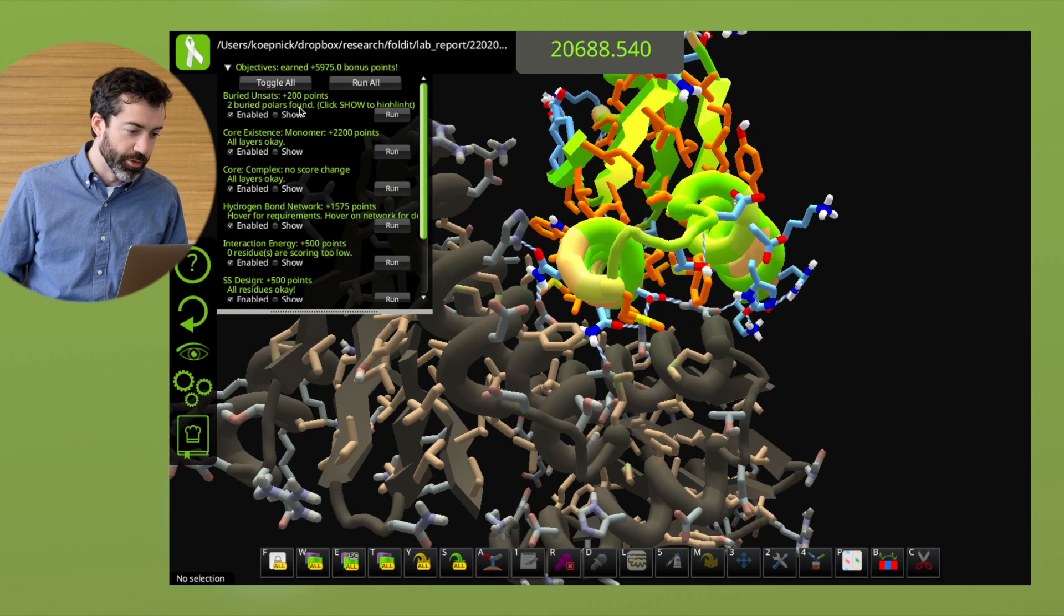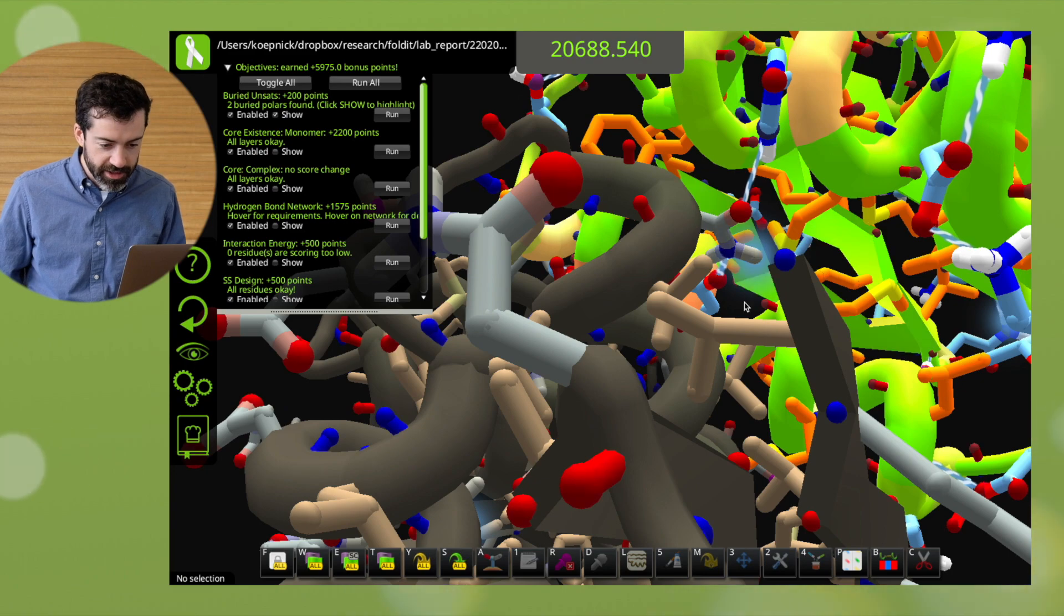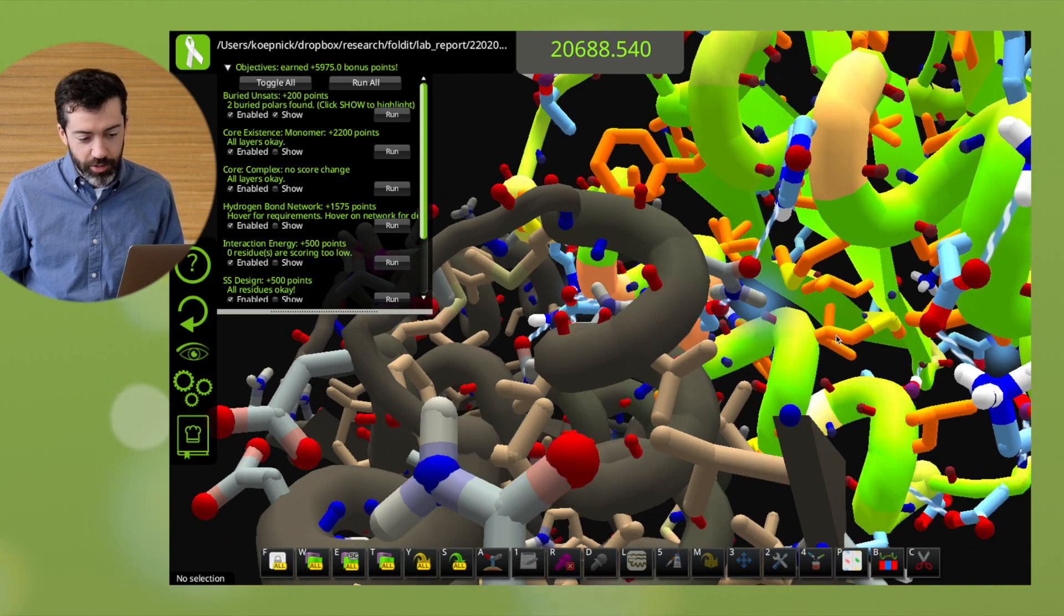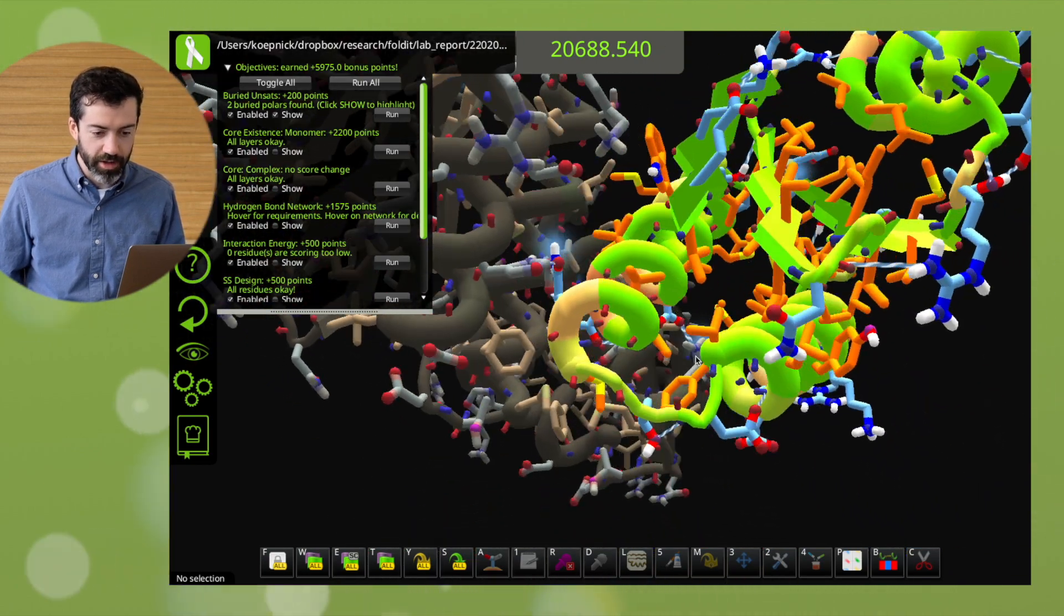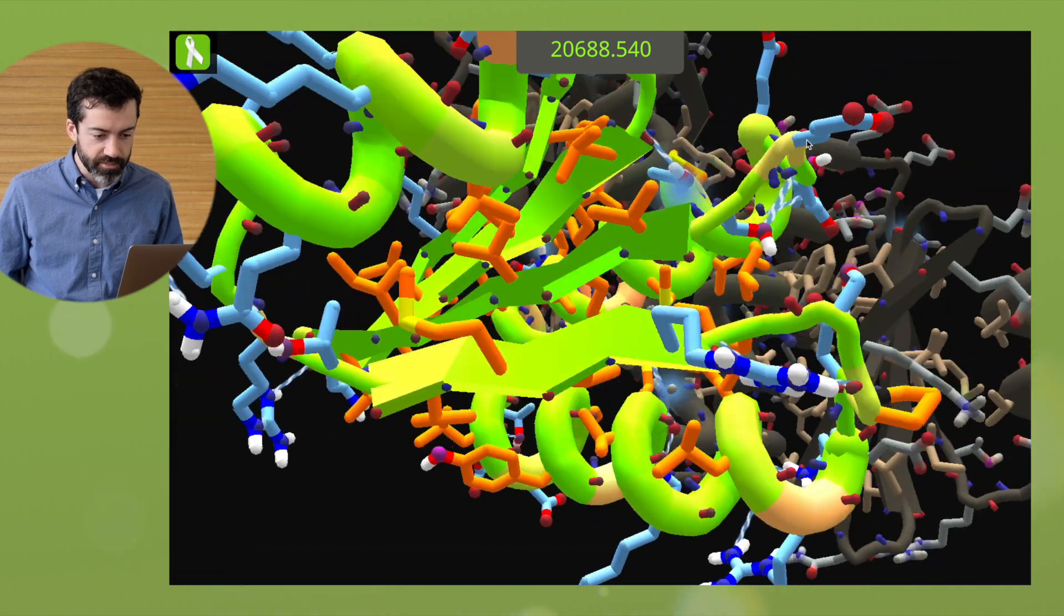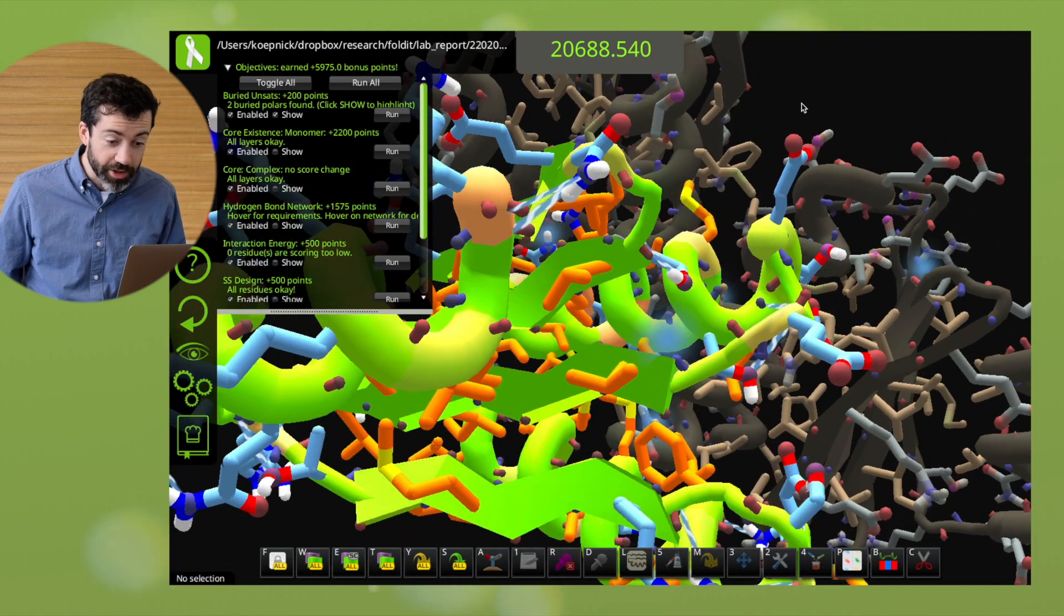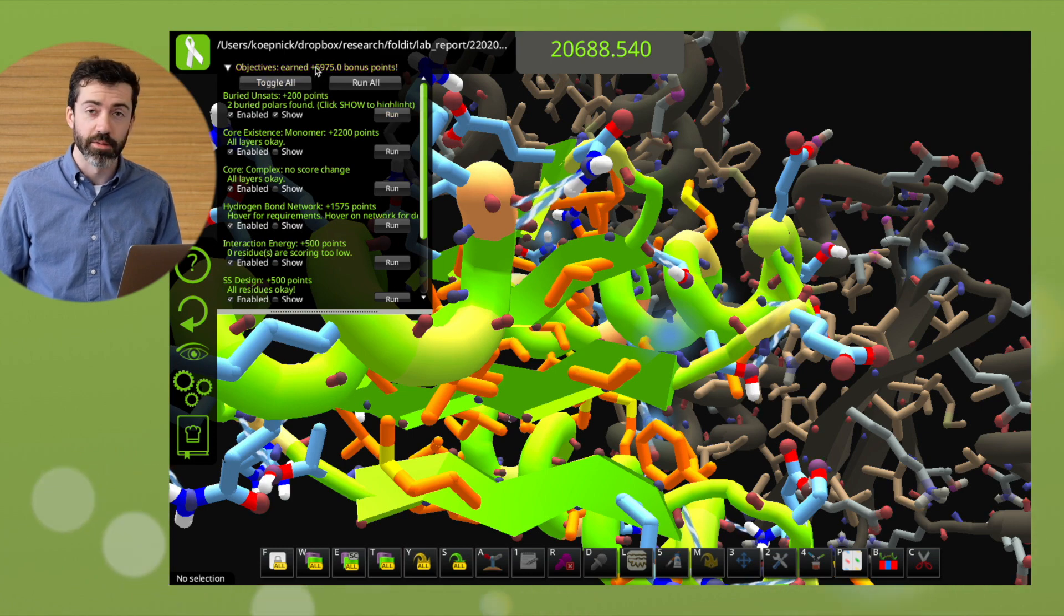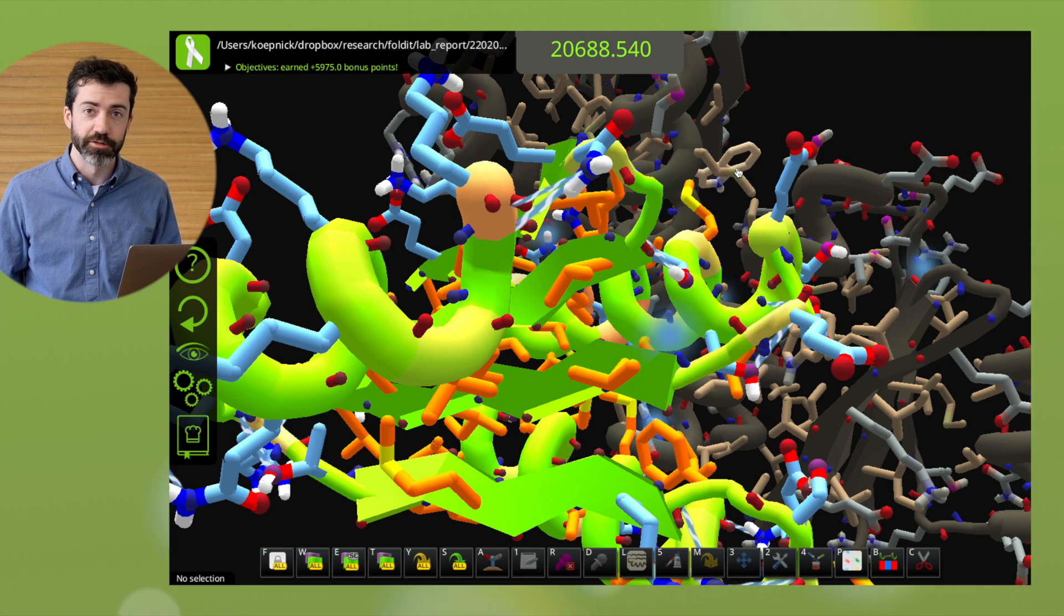If we look at the objectives we do see that there are two buns that Foldit has flagged here. It looks like there's one asparagine at the interface that is not completely satisfied. It's questionable maybe whether some water could get in there and form a hydrogen bond there and I believe there's another one on a sheet on the back side which looks like maybe some water could also get in here. That could just be a Foldit artifact but we do want to look out for buns because buns will be problems for protein folding. Every polar atom in a protein needs to make a hydrogen bond either with another polar atom or with the water that surrounds the protein.